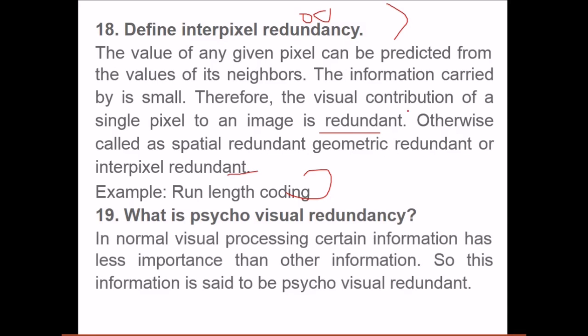What is psycho-visual redundancy? In normal visual processing, certain information has less importance. And another information, our eye is attracted to some objects, some colors, some patterns, while for some our eye will not be. This information is said to be psycho-visual redundancy.